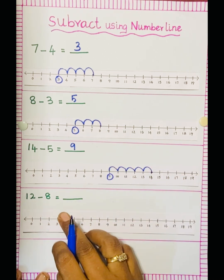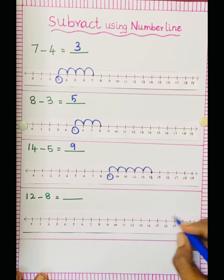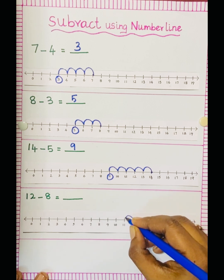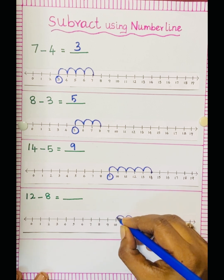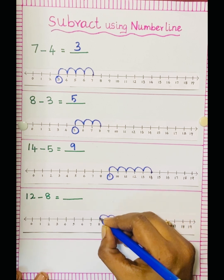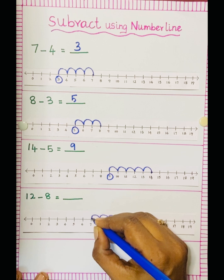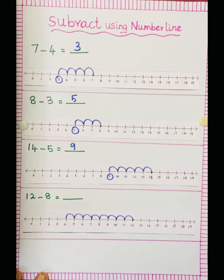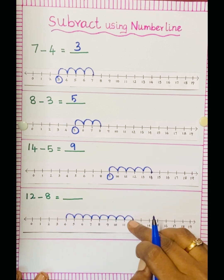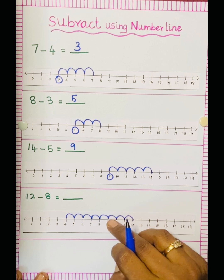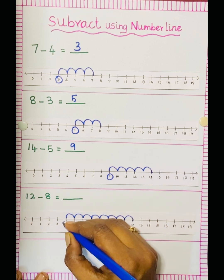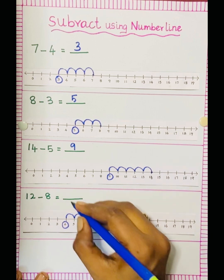12 minus 8. So that is 12, minus 8 means 8 jumps: 1, 2, 3, 4, 5, 6, 7, 8. So count here: 1, 2, 3, 4, 5, 6, 7, 8. So the answer is 4.